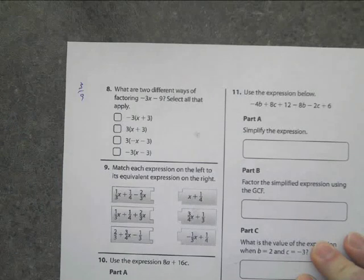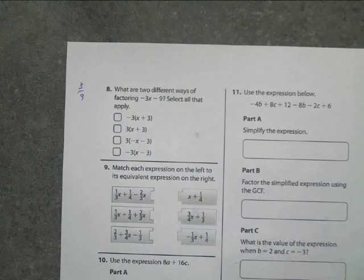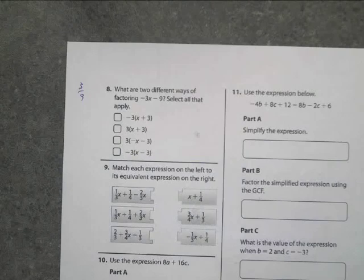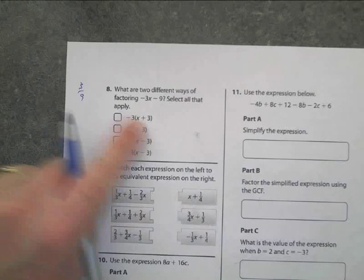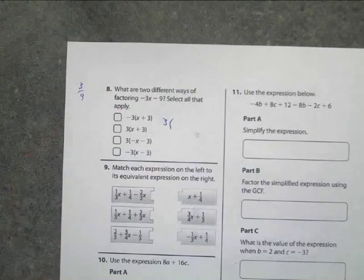If I was to tell you 3 9ths, who can raise their hand and tell me what I would reduce 3 9ths to? If you saw a fraction of 3 9ths? 1 3rd. Now, that means I'm going to divide a 3 out of it. Now, I've got all these different crazy symbols here. So, I'm going to put a 3 right here. And I'm going to put parentheses.